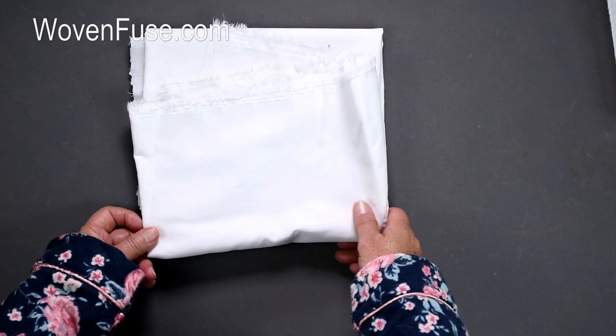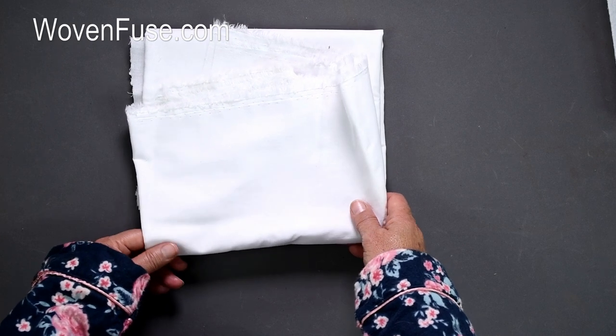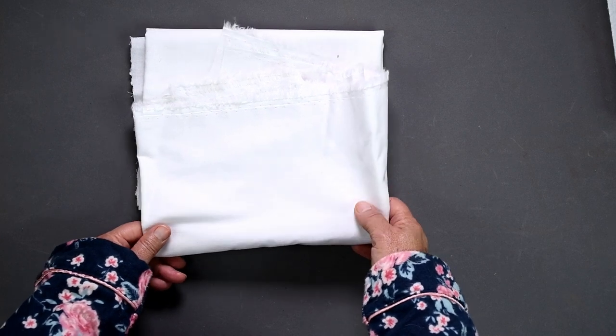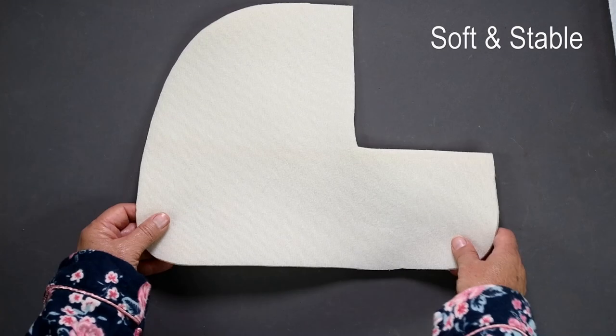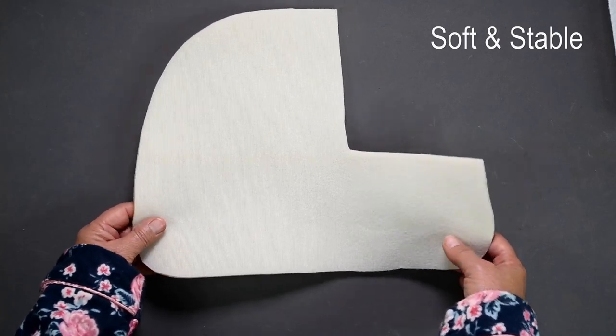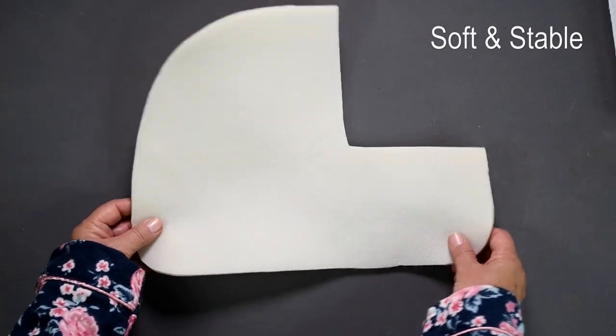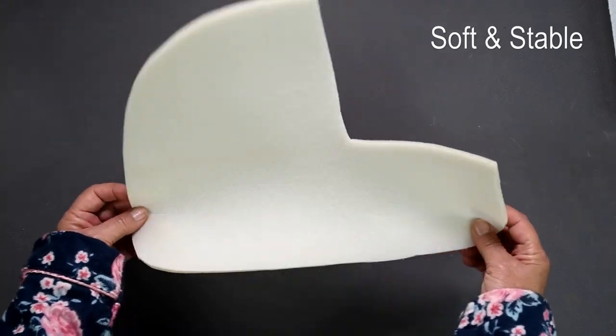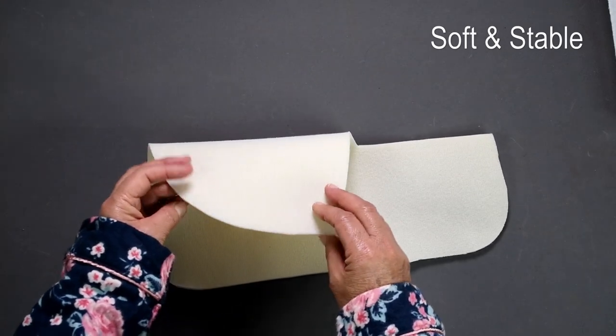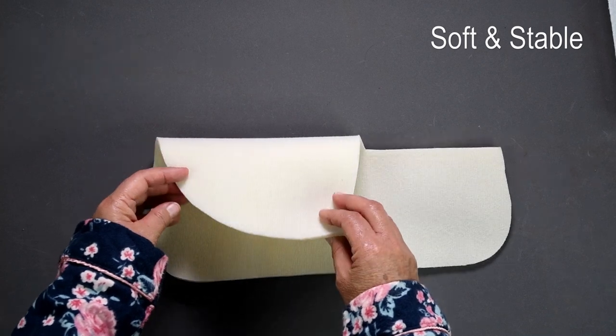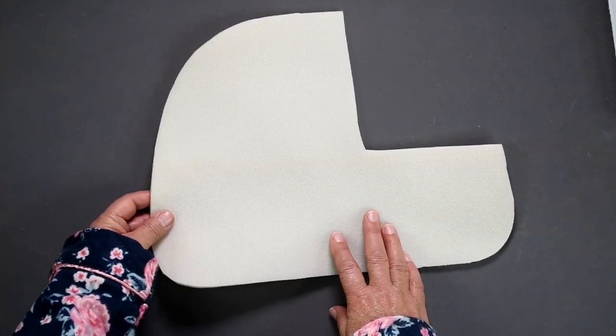Oh and no, you do not need to add Shapeflex or Woven Fuse to vinyl, leather or cork. Apart from interfacing your bag you will need to add something which will give it some support and shape. Soft and Stable, a foam stabilizer is my favorite for bags where I want them to have a lot of structure and be able to stand up on their own.